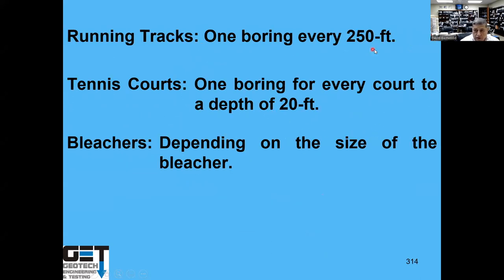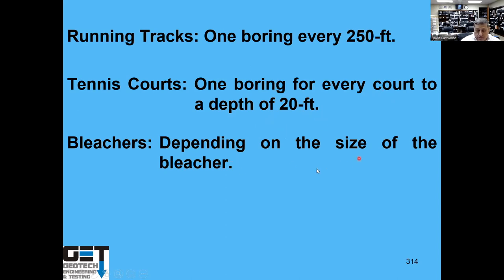For running tracks, one boring every 250 feet to a depth of 10 feet. Tennis courts: one boring to 20 feet deep for every court. If you've got five courts, you do five borings to 20 feet; if you have one court, you do two borings to 20 feet. Bleachers — depending on size: heavy big bleachers may require 40-foot borings; smaller ones need only 20-foot borings.